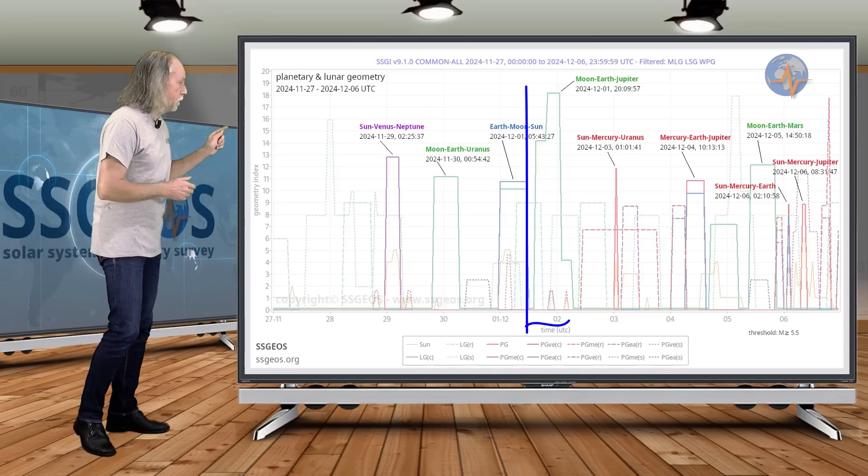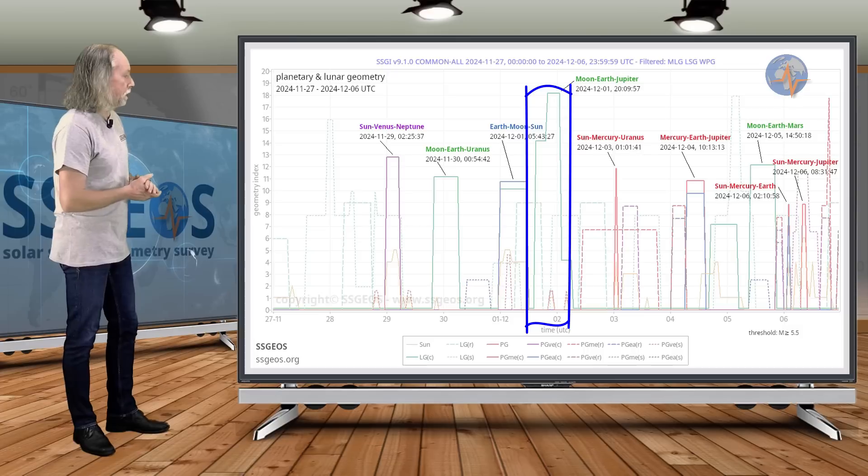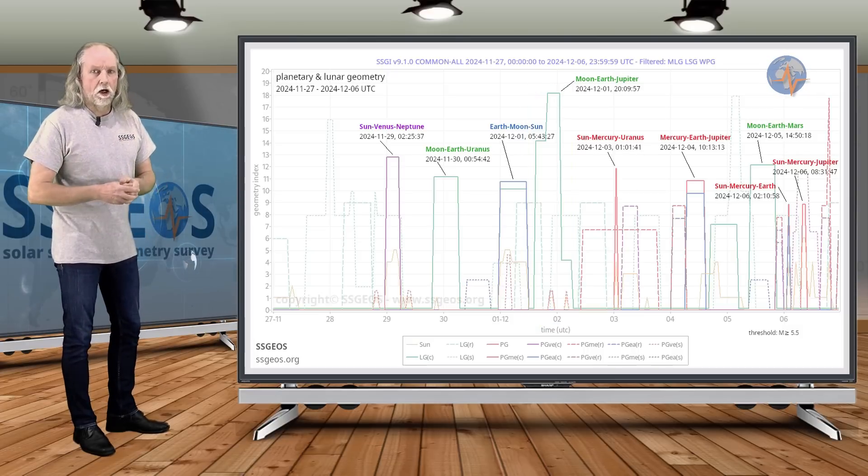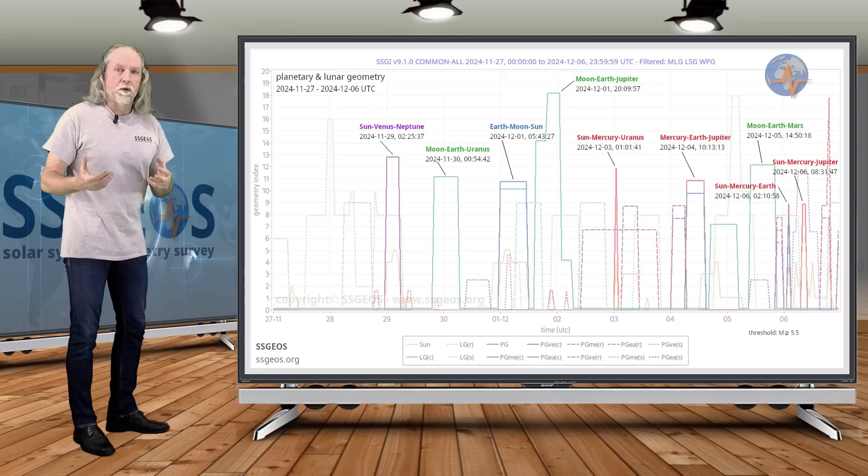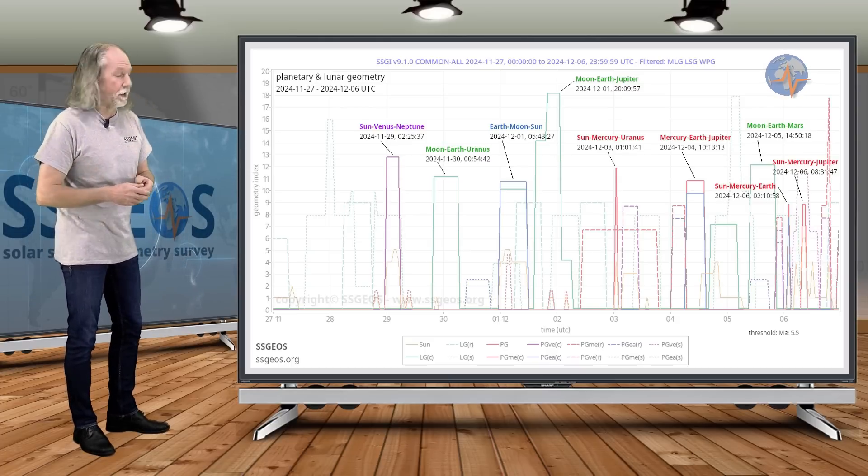We have Moon, Earth, Jupiter also on the 1st, the end of the 1st of December, and we often see some seismic increase after the moon aligns with a gas giant, certainly Jupiter and Saturn.